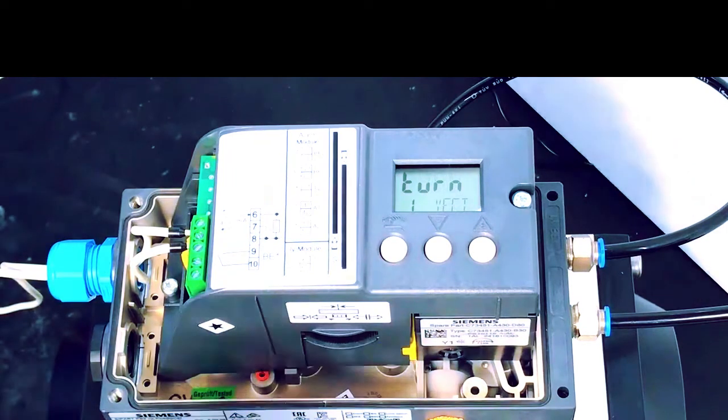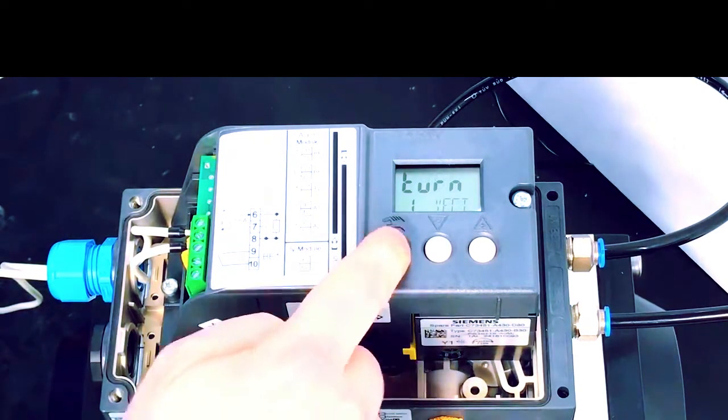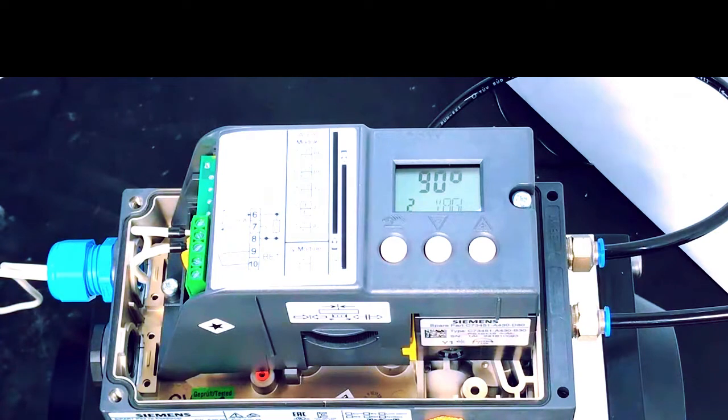This is a part turn actuator, so we're setting it to turn. This next option is used to determine the sensitivity of the positioner. For all 90 degree quarter turn applications, you want this set to 90 degrees.